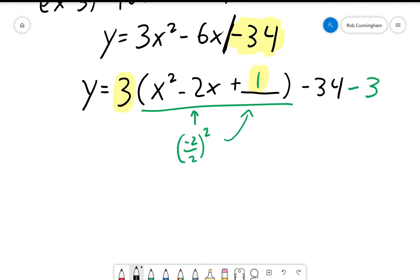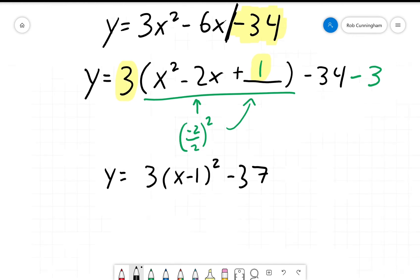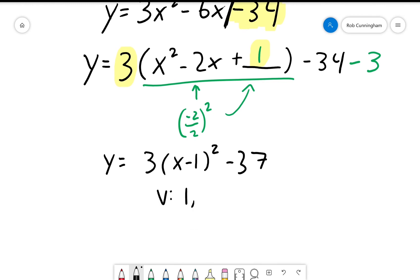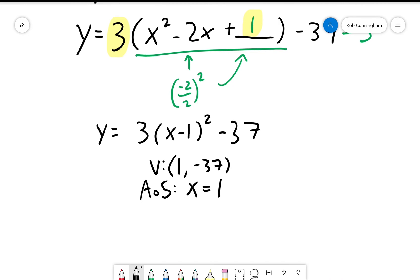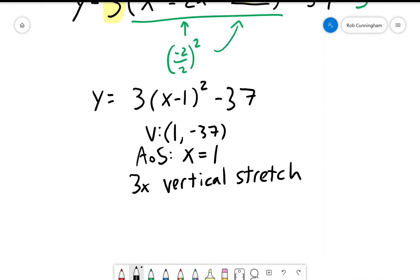Okay, well the whole point of this: x squared minus 2x plus 1 is the same thing as x minus 1 squared. The 3 is still there, and negative 34 minus 3 is negative 37. So our vertex is 1, negative 37. Our axis of symmetry is x equals 1, and we have a 3 times vertical stretch. If you really want to challenge yourself, see if you can also find the y-intercept and the x-intercepts. But for now, let's move on to the next example.